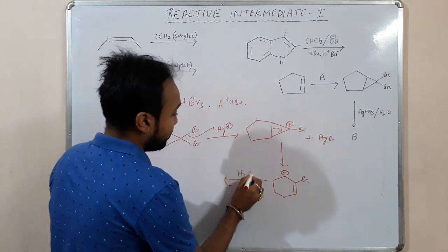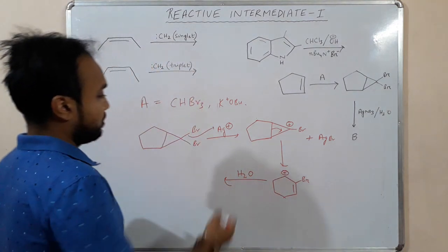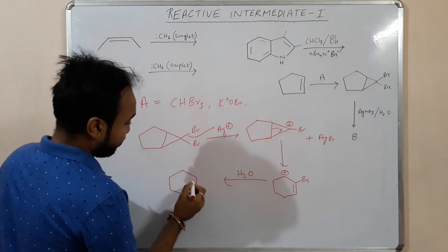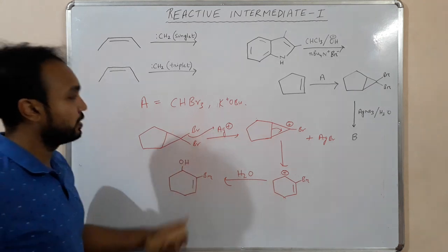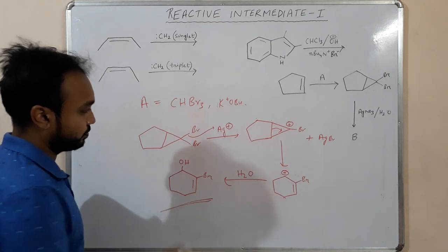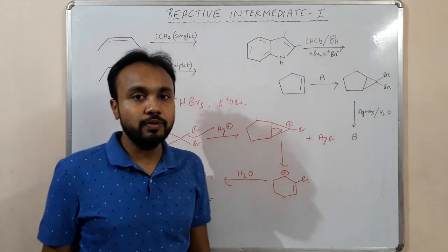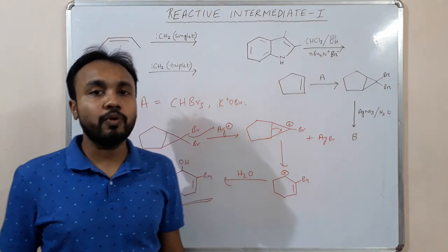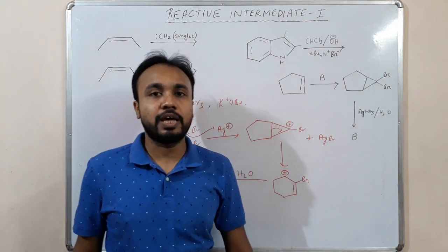Water then adds to the carbocation, giving an OH group at that position, and that is the final product of this reaction. That's all for this video. In upcoming videos I will explain more examples on reactive intermediates. Hope you liked this video — thank you for watching.